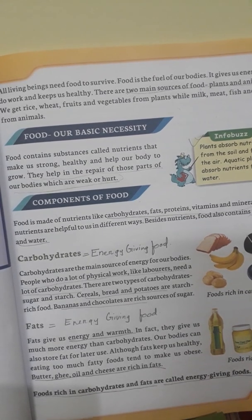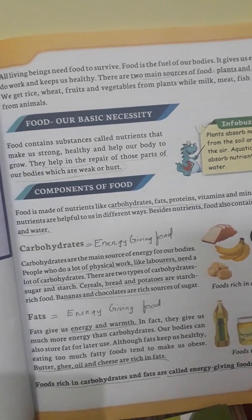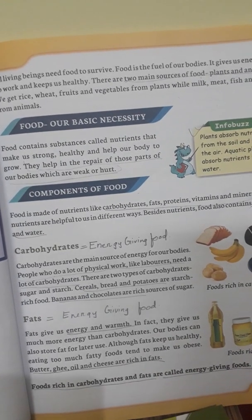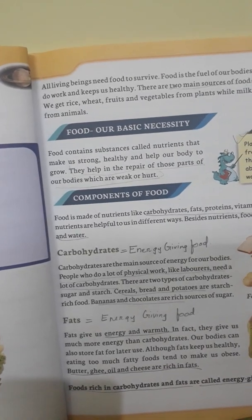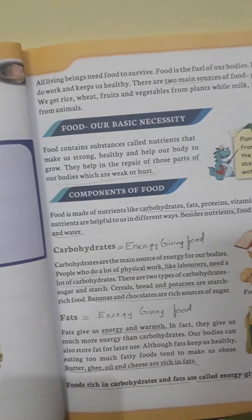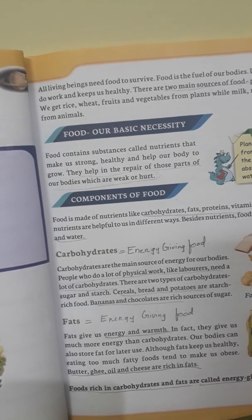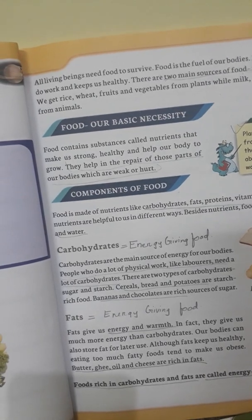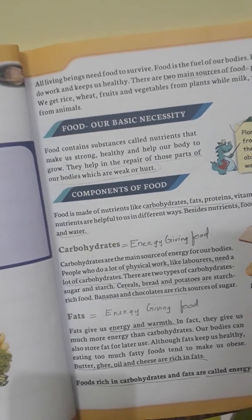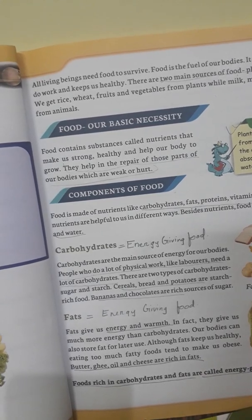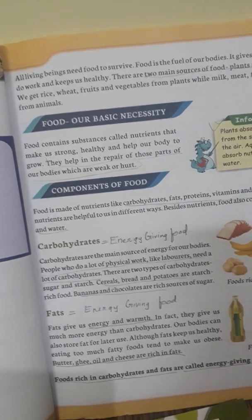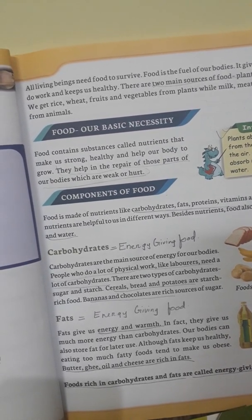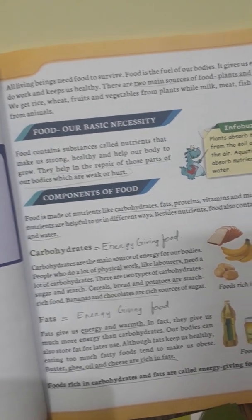Coming to the first part — carbohydrates, which are energy-giving food. Carbohydrates are the main source of energy for our bodies, needed for all our daily activities. People who do a lot of physical work, like laborers, need a lot of carbohydrates to keep up their energy level. Carbohydrates are divided into two types: sugar and starch. Cereals, bread and potatoes are starch-rich foods, whereas bananas and chocolate are rich sources of sugar.